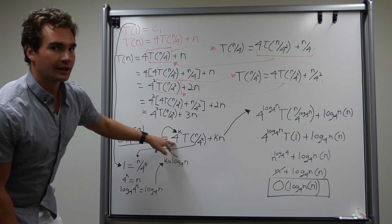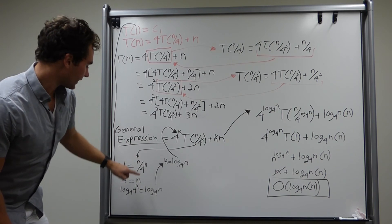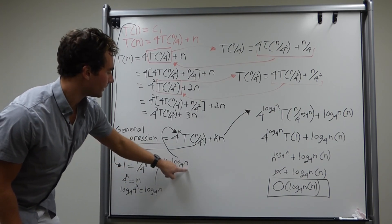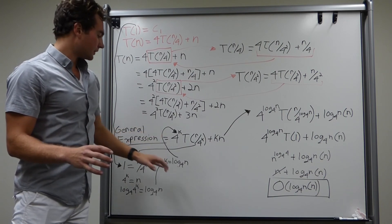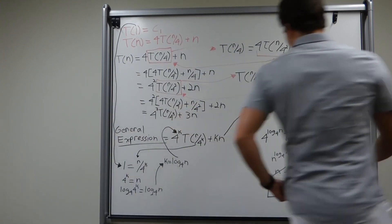Now, we need to solve for k with the base case. Here, 1 is equal to n over 4 to the k. We do some math. We get k equal to log base 4 of n. So, now we need to plug in our value of k into our general expression according to our algorithm, which we get over here.